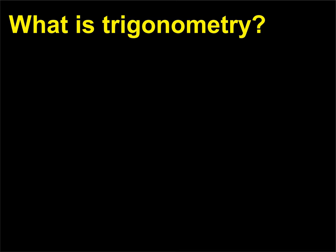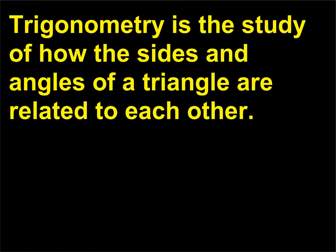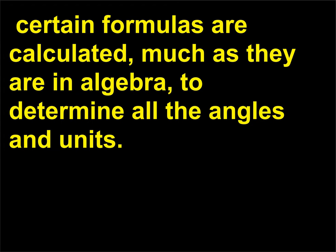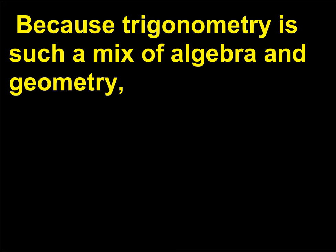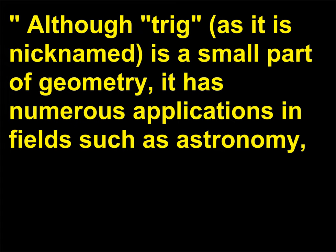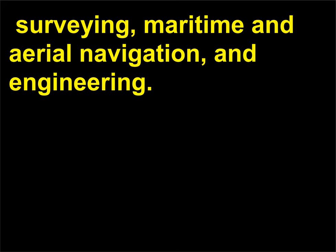What is trigonometry? Trigonometry is the study of how the sides and angles of a triangle are related to each other. Interestingly, the angles are usually measured in terms of a circle around the x and y axes. From there, certain formulas are calculated, much as they are in algebra, to determine all the angles and units. Because trigonometry is such a mix of algebra and geometry, it is often considered the art of doing algebra over a circle. Although trig, as it is nicknamed, is a small part of geometry, it has numerous applications in fields such as astronomy, surveying, maritime and aerial navigation, and engineering.